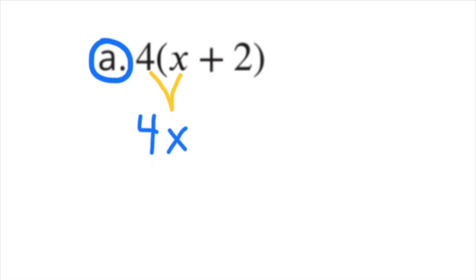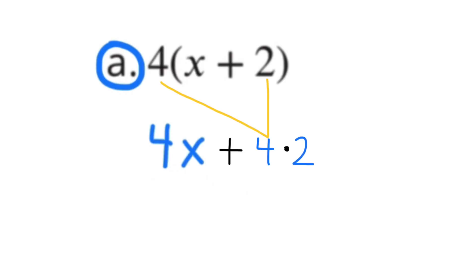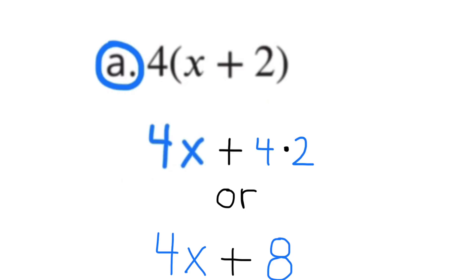A. 4 times (x plus 2). 4 times x is 4x, bring down the plus sign, and 4 times 2 is 8. So an equivalent expression would be 4x plus 8, or 4 times x plus 8.